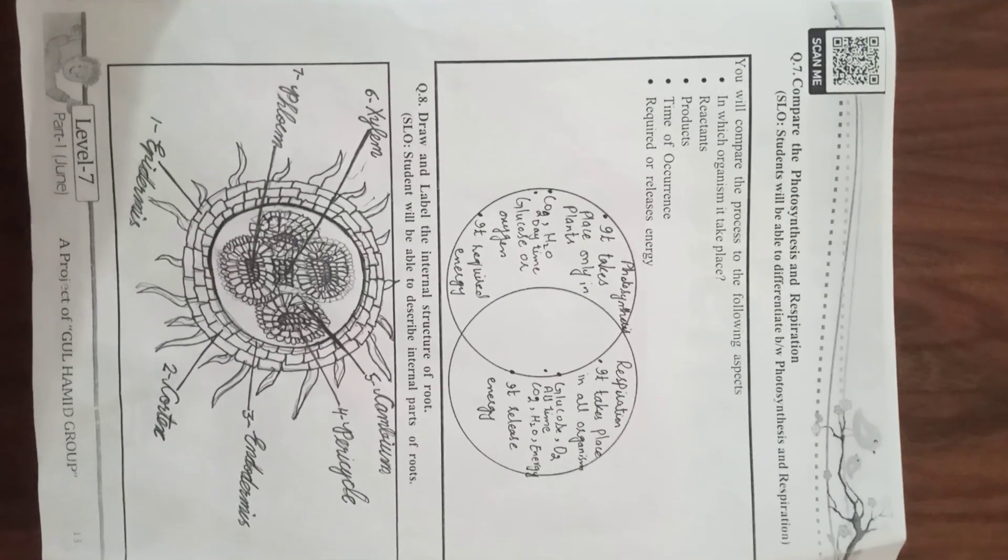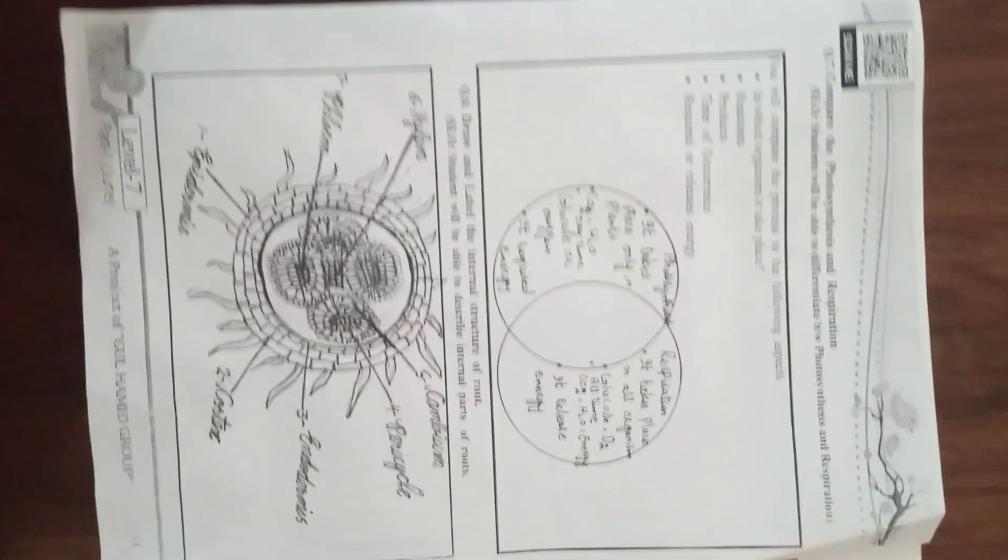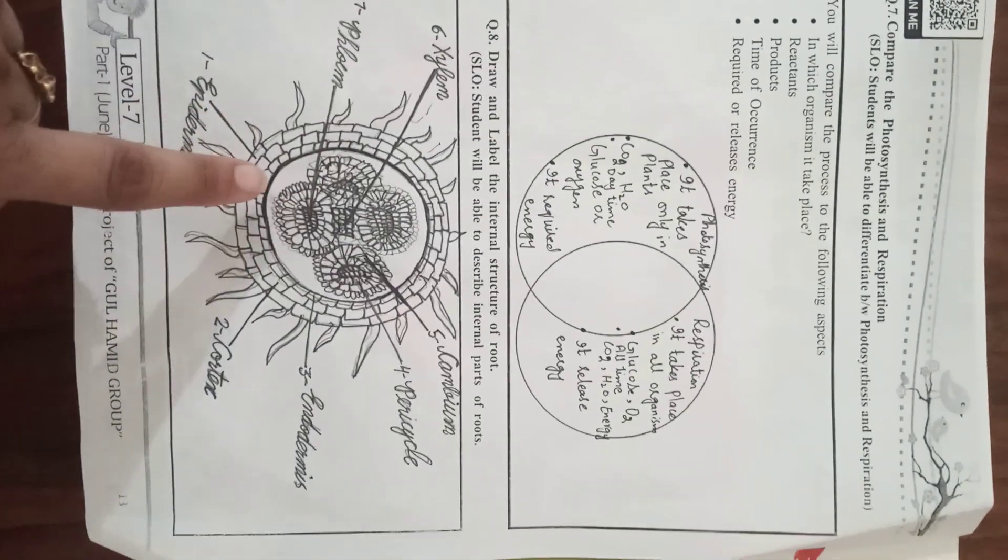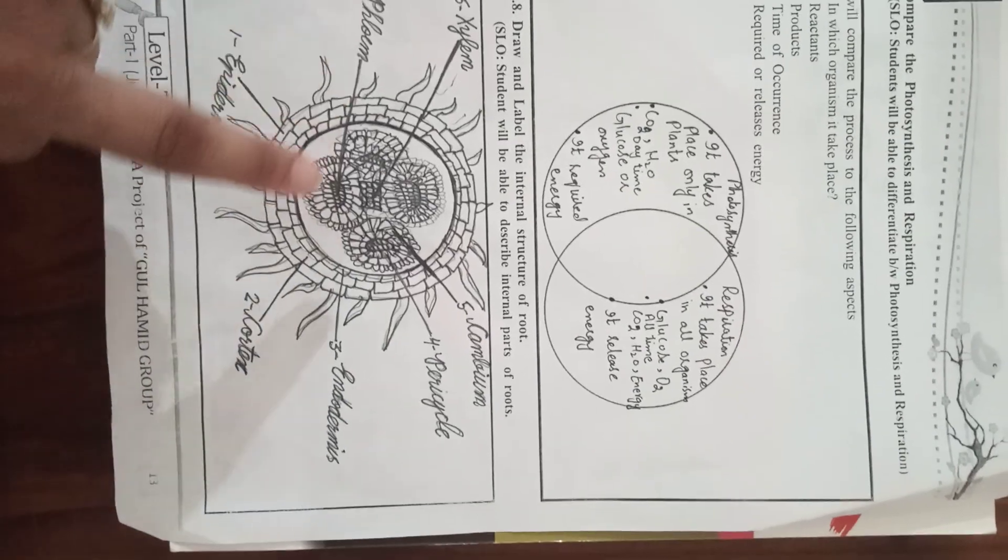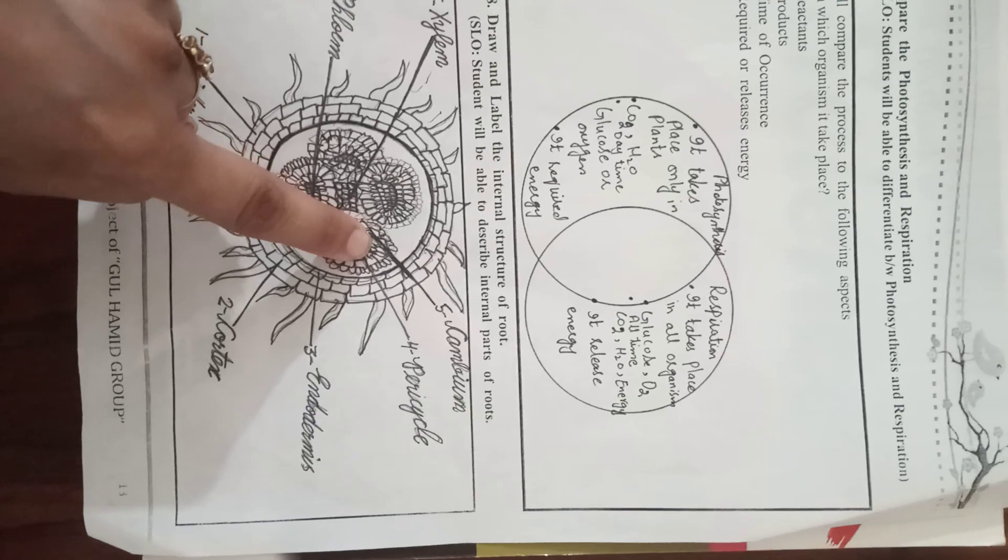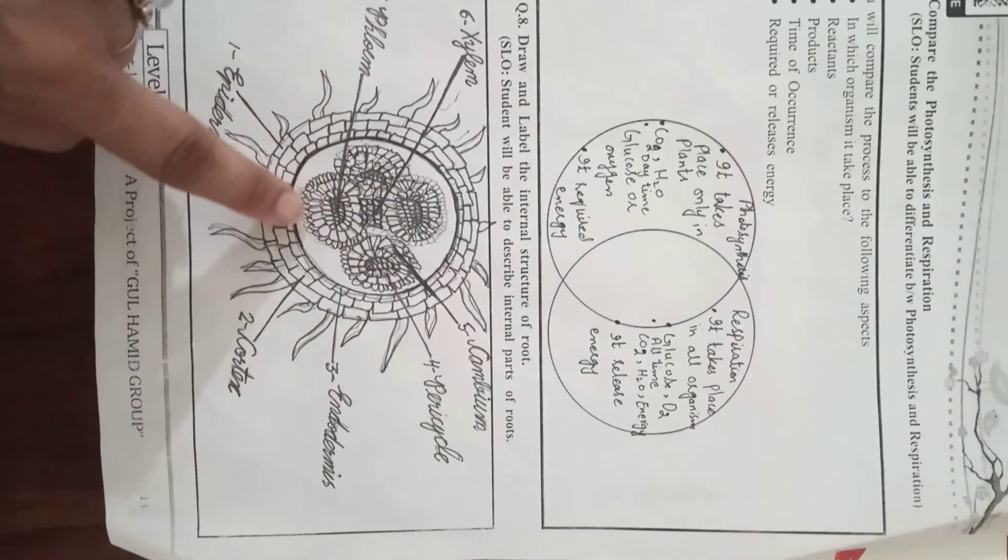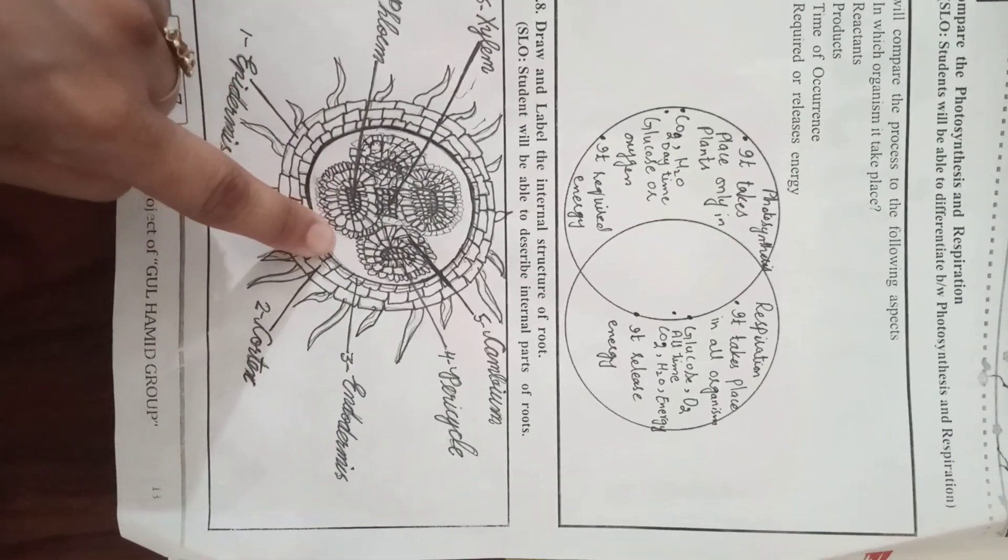Question number 8: Draw and label the internal structure of root. Student learning objective: student will be able to describe internal parts of root. The outer layer is known as epidermis. These are root hairs. Inner layer is known as endodermis. This is pericycle. Outer layer of pericycle known as cambium. Phloem. Xylem. And this is known as cortex.